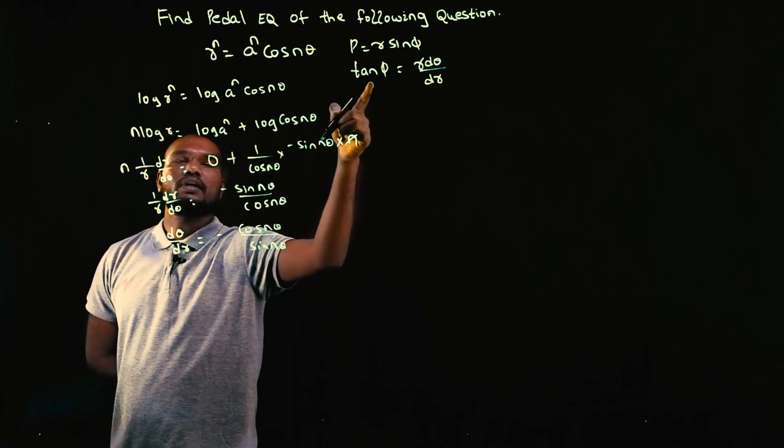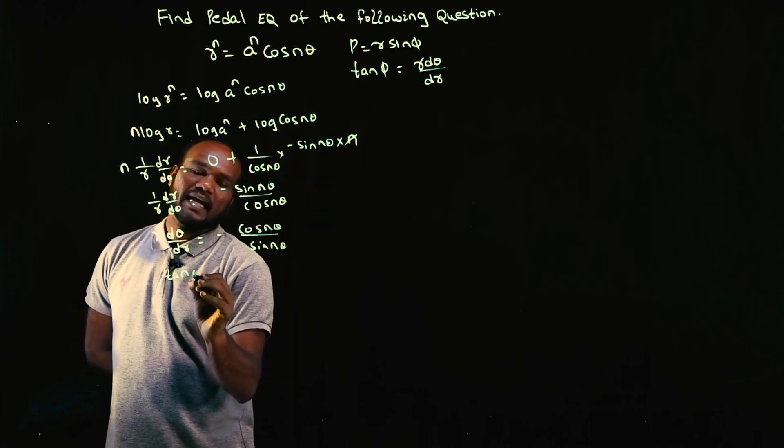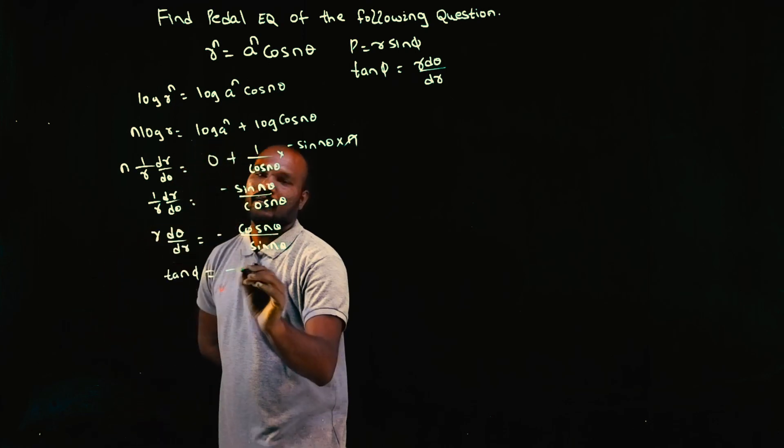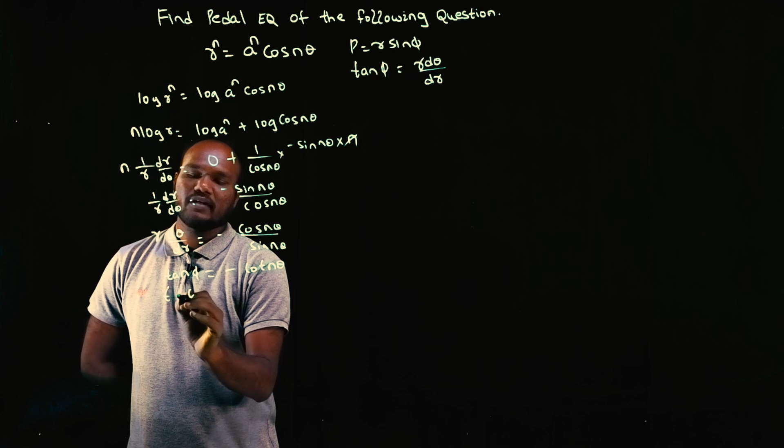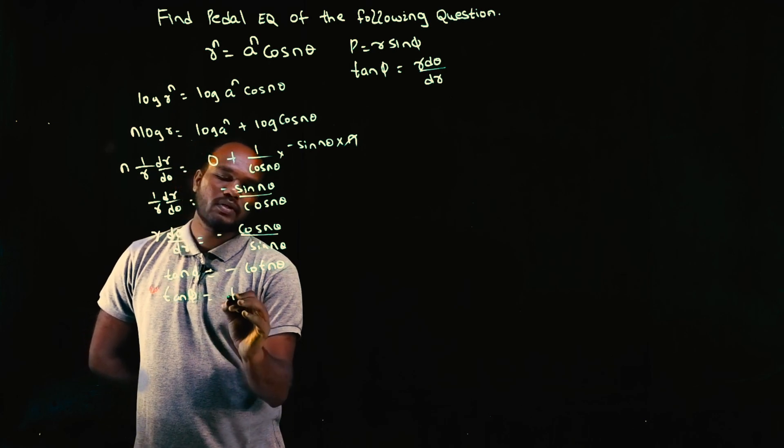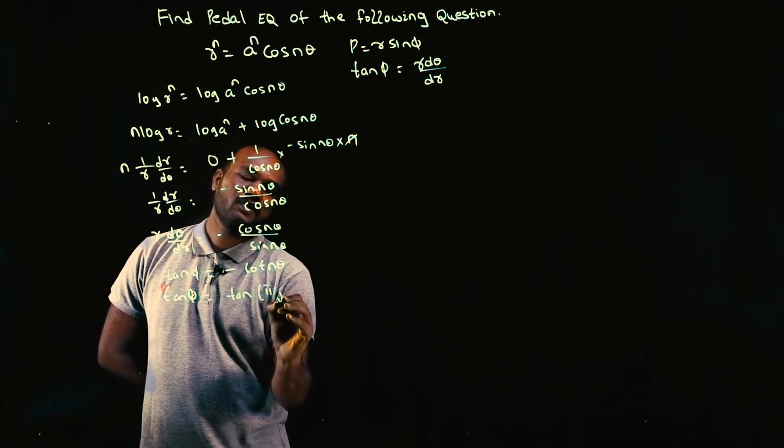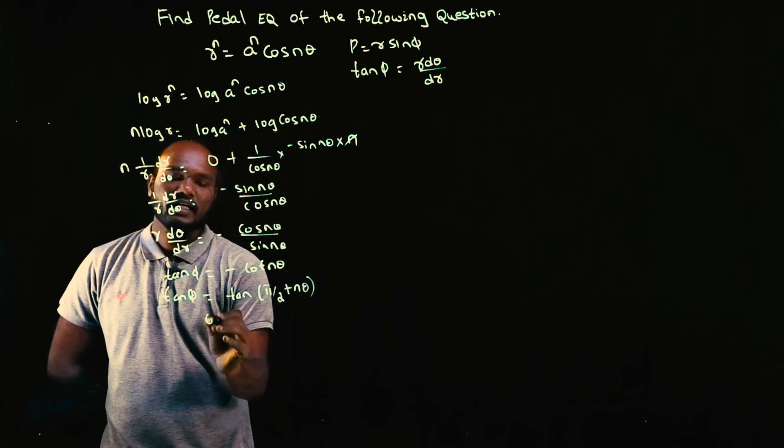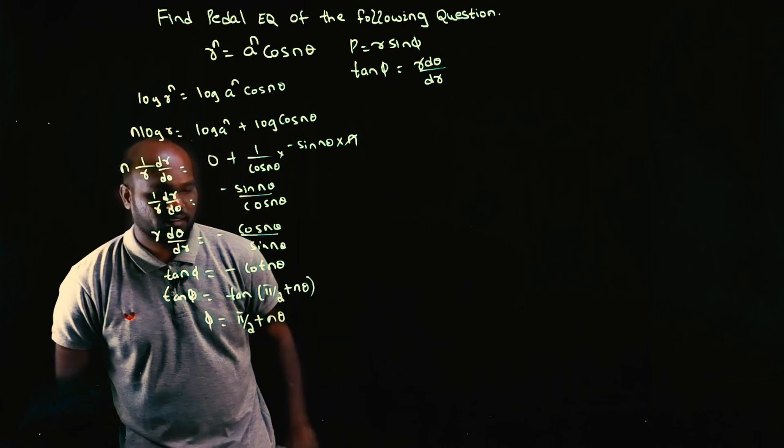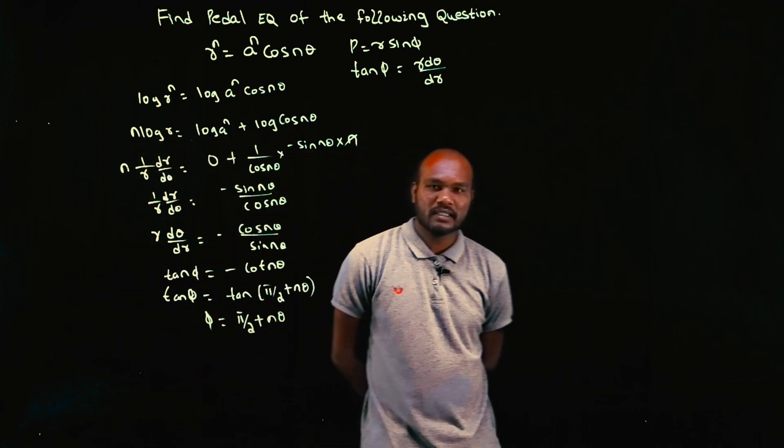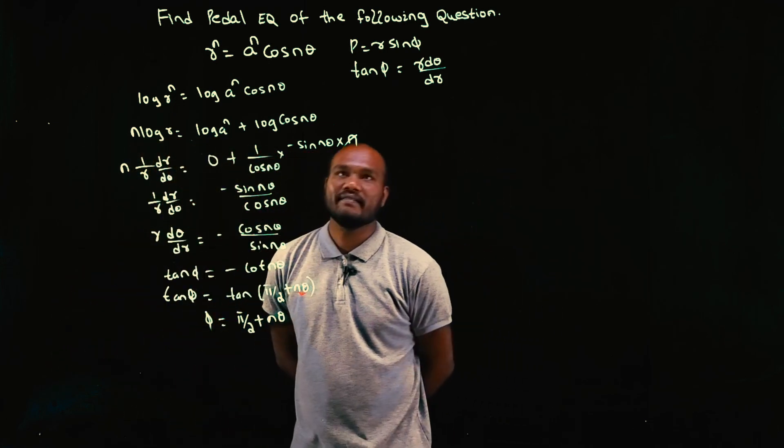So R into d theta by dr is what? Tan phi. So tan phi is given as minus cot n theta. So tan phi is equal to tan of pi by 2 plus n theta. Tan tan we can take it out. Phi is equal to pi by 2 plus n theta. We have now phi value.